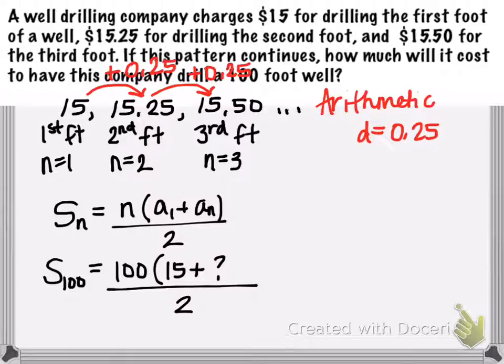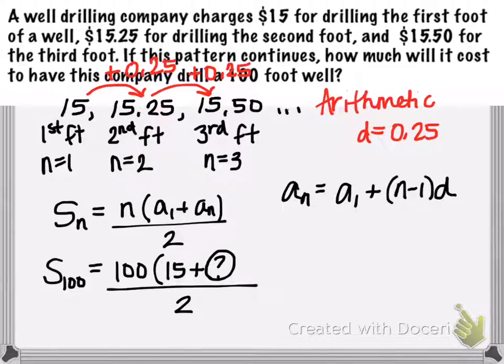So we need to time out here for a second. We need to figure out what is this 100th term, or in the context of this problem, how much does it cost to drill the 100th foot? Now we need to go back and figure out what's the equation for this sequence, not the sum, but the general equation. You can use your general form for an arithmetic sequence, where we know we always take the first term and then we add n minus 1 times d, the common difference.